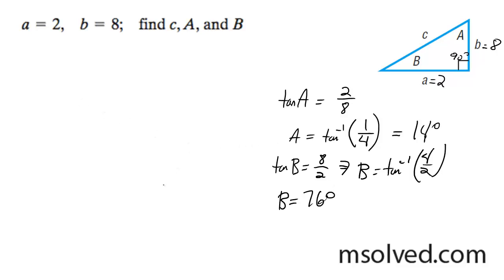Now to get C, since I have these values, for C I can do sine of 76 degrees equals 8 over C, so C equals 8 divided by sine of 76 degrees, which gives 8.25.